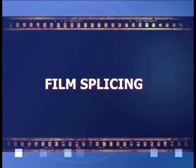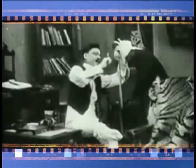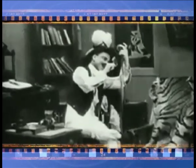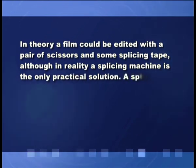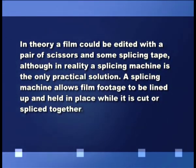There are several different ways to edit video and each method has its pros and cons. Although most editors opt for digital non-linear editing for most projects, it makes sense to have an understanding of how each method works. Technically, the first method is film editing — it is the first way to edit moving pictures and conceptually forms the basis of all video editing. Traditionally, film is edited by cutting sections of the film and rearranging or discarding them. The process is very straightforward and mechanical — in theory, a film could be edited with a pair of scissors and some splicing tape, although in reality a splicing machine is the only practical solution. A splicing machine allows film footage to be lined up and held in place while it is cut or spliced together.